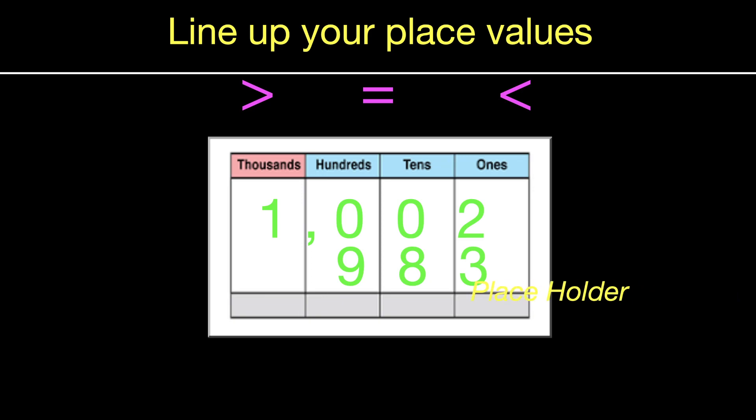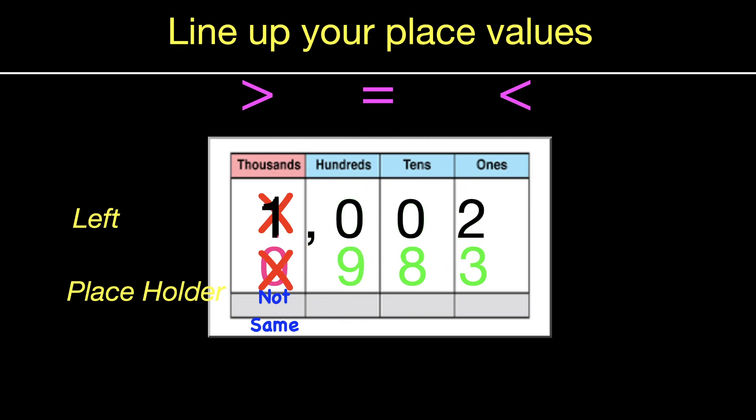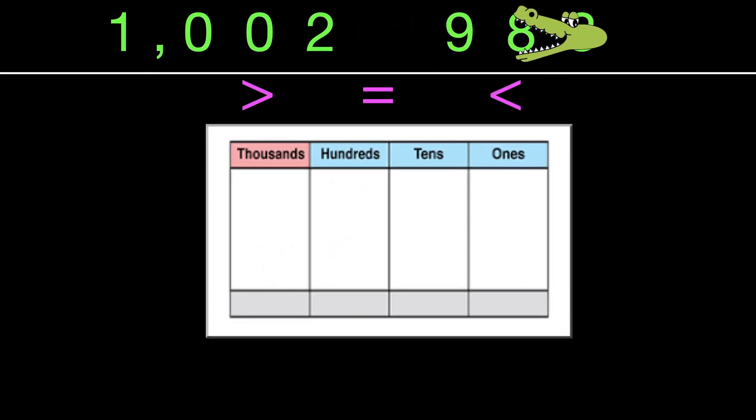So we did that now. Put in a placeholder. Anytime you have an empty spot like that for the place value, remember that nothing equals zero. Not a bad idea to put in a zero. At least do that mentally. And so when we compare from the left side in our thousands, 1 and 0 are not the same. The 1 is definitely greater, which means that by rule, that number is greater. And we would read this problem as 1,002 is greater than 983.